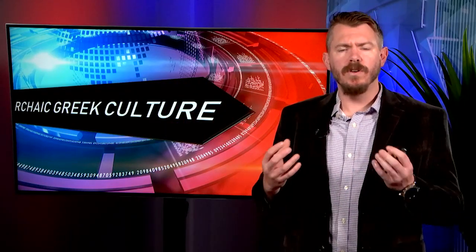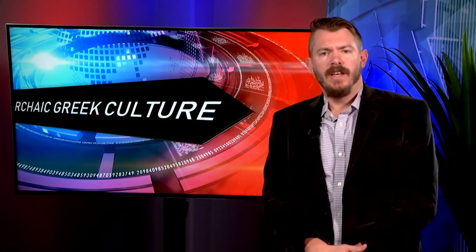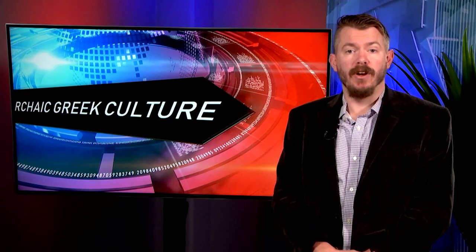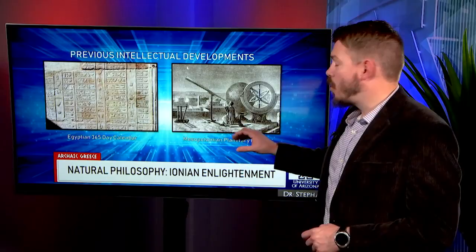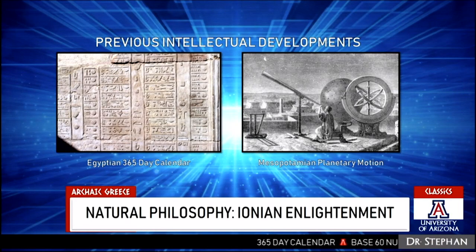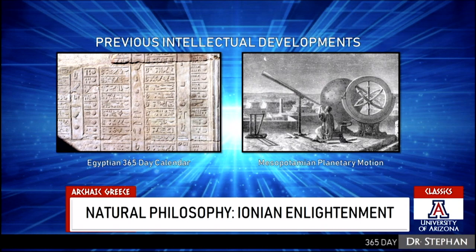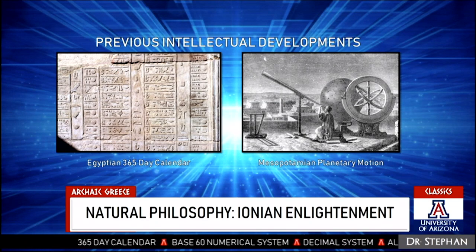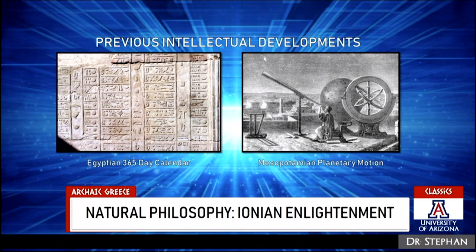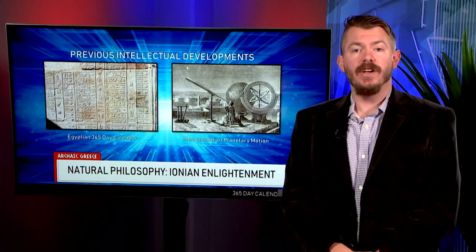Those are some of the reasons we see a move towards equality in the ancient Greek world. Now let's think about what's going on culturally during the Archaic period. We get all kinds of intellectual developments. Other civilizations had achievements — the Egyptians had a 365-day calendar, Mesopotamians understood the motion of the planets, different cultures developed the decimal system and algebra and geometry. But within the Greek world, we start to get a philosophical movement towards understanding how the natural world works.